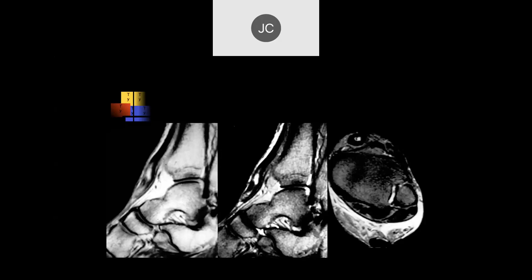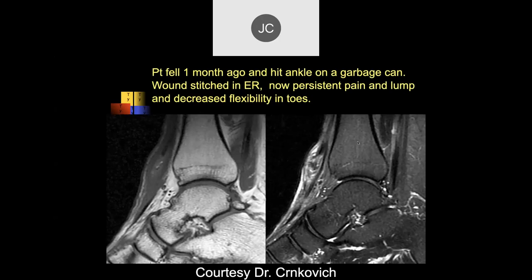This is a complete tear — the tibialis anterior was completely torn off its attachment to the medial cuneiform and retracted back with fraying of the distal fibers. Like we've talked about elsewhere, first you get tendinosis and weakening of the tendon, then finally you have rupture. That's a tibialis anterior complete tear with retraction.